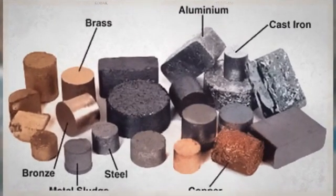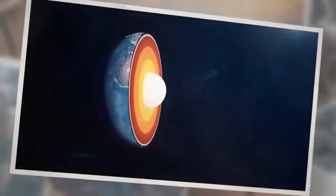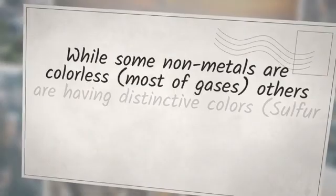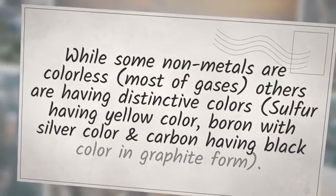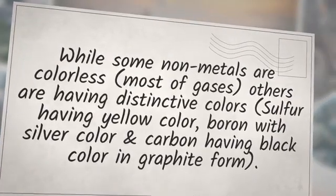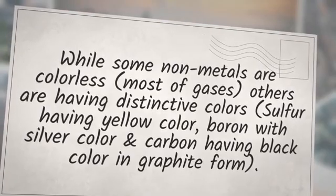Metal refers to the elements found in earth's crust having specific physical properties such as luster, hardness, malleability, electrical and thermal conductivity, etc. You may have read that the earth's core is made with iron and nickel, both are heavy elements. While some non-metals are colorless, most are gases. Others have distinctive colors — sulfur having yellow color, boron with silver color, and carbon having black color in graphite form.